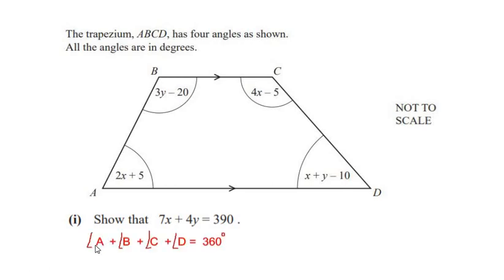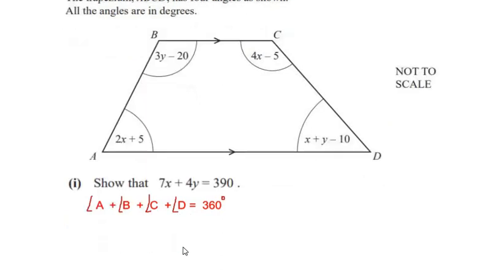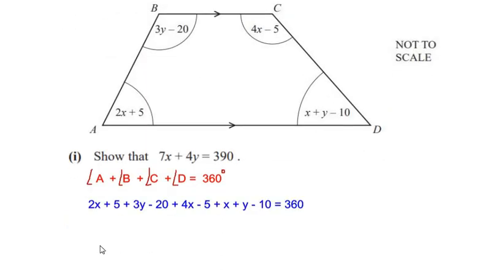Angle A plus B plus C plus D is equal to 360 degrees. The value of each angle is given in terms of x and y. Let us substitute the values of each angle in place of A, B, C, and D. So A is 2x plus 5, B is 3y minus 20, C is 4x minus 5, and D is x plus y minus 10.